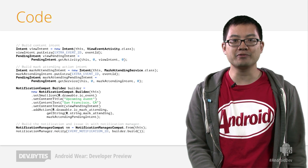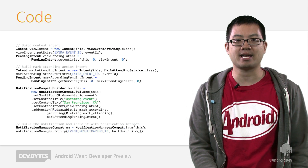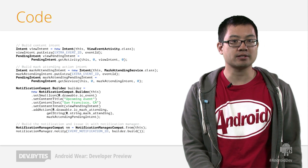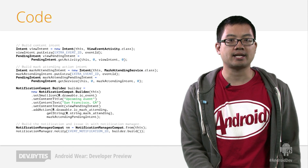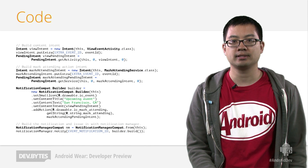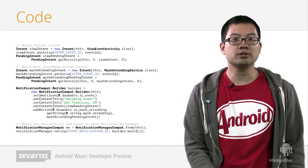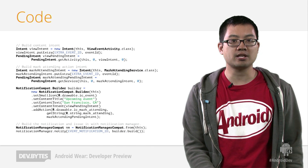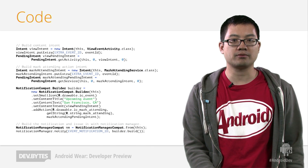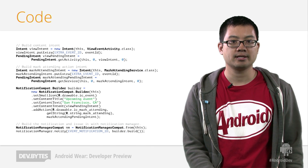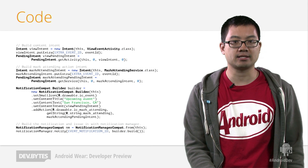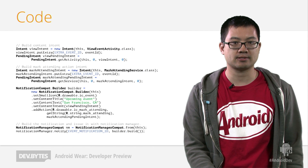Instead, I just swipe over to the right and tap the action. That starts a service on the phone that can add the event to my calendar and then remove the notification. Note that I could have used the notification styles introduced in Android 4.1, such as big picture style, to show a photo alongside the notification text.